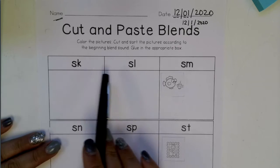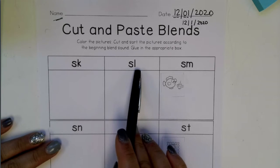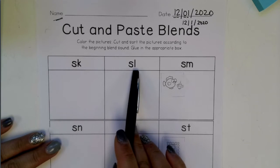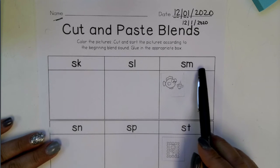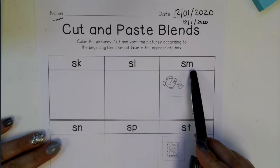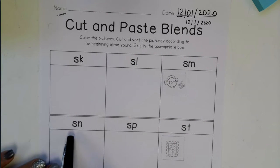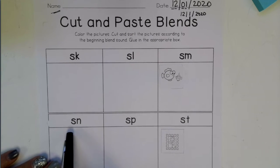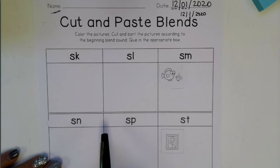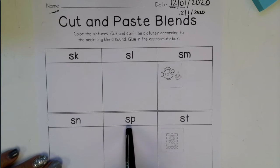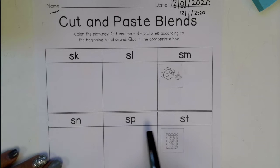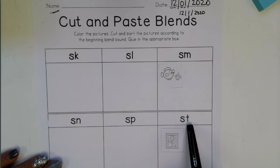SK says SK, SL says SL, SM says SM, SN says SN, SP says SP, and ST says ST.